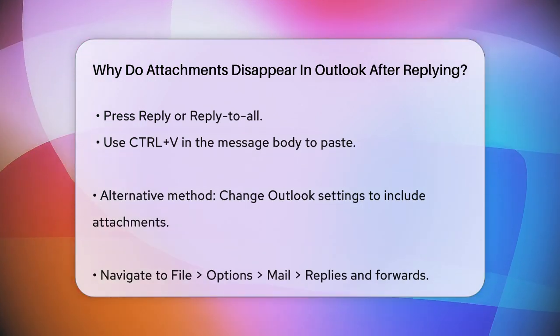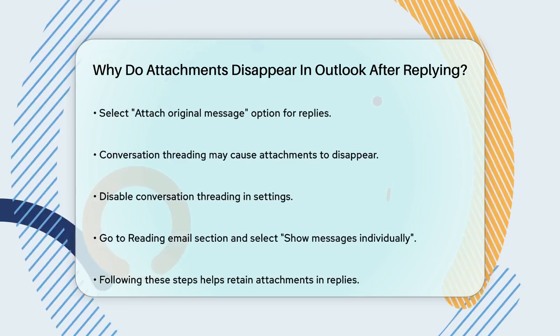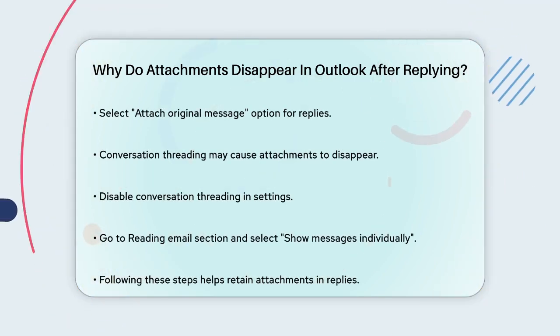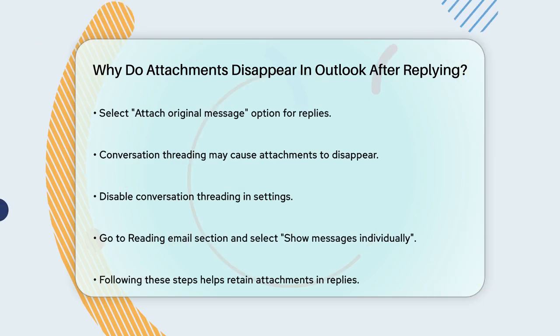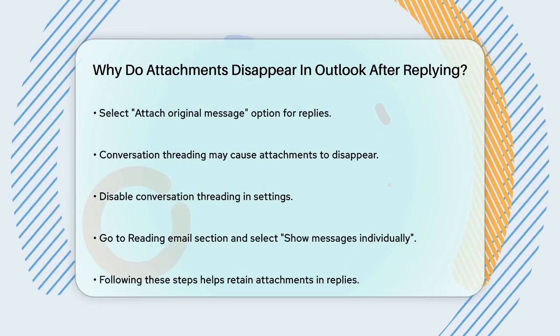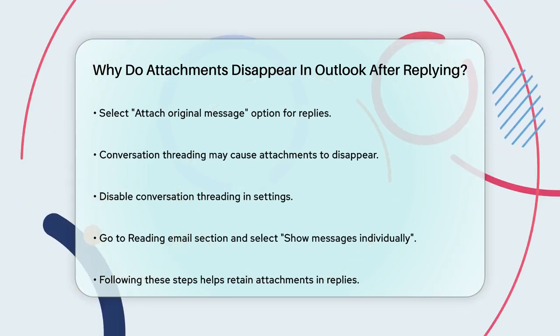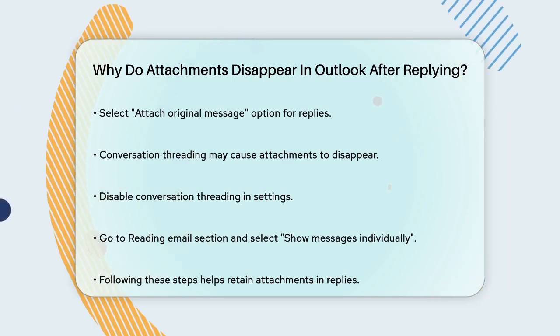It's also worth noting that if you have conversation threading enabled, it might be causing the attachments to disappear. You can disable this feature by going to Settings in Outlook, navigating to the Reading Email section, and selecting Show Messages Individually.